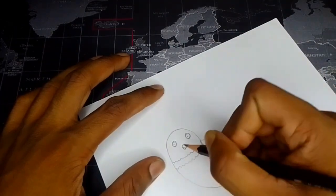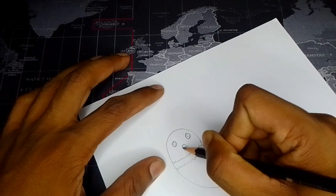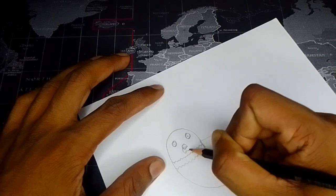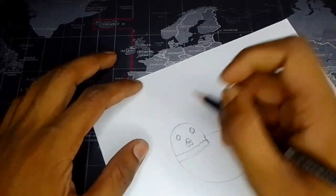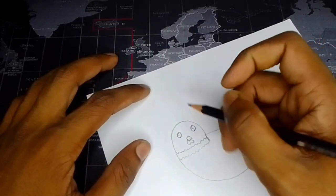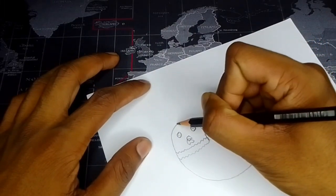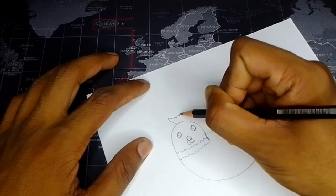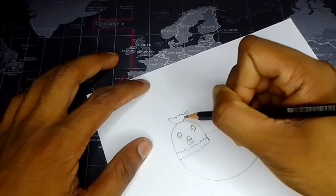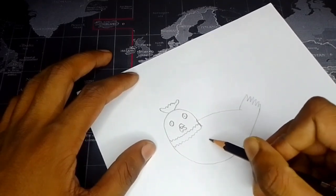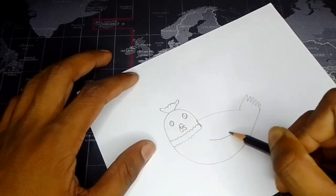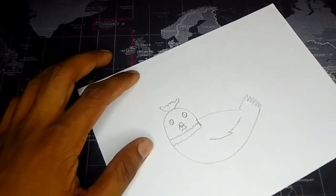Okay, and now the little red thing, whatever it's called. I don't know the name, but it looks like this on the head. Make it just like this.